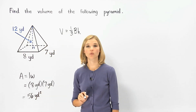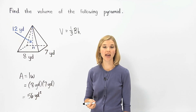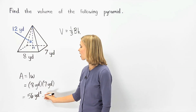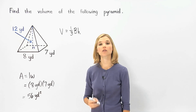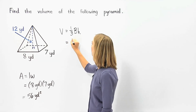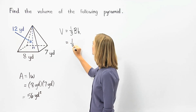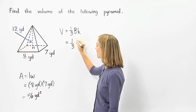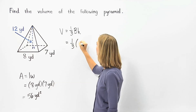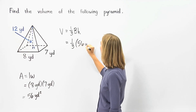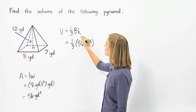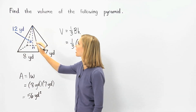So the area of the rectangle, or the area of the base of the pyramid, is fifty-six square yards. Now, to find the volume of the pyramid, we take one-third times the area of the base, which is fifty-six square yards, times the height of the pyramid, which is twelve yards.